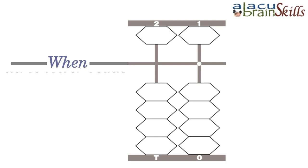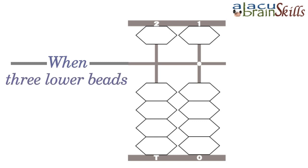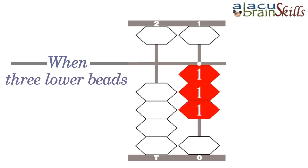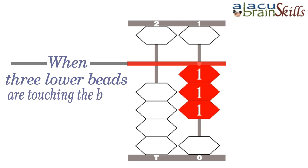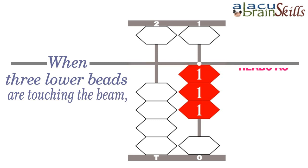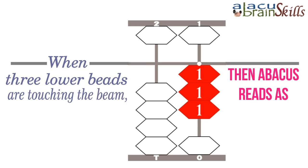When three lower beads are touching the beam, then the Abacus reads as 3.